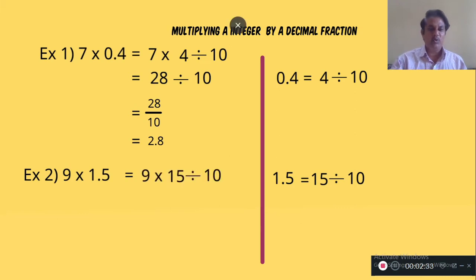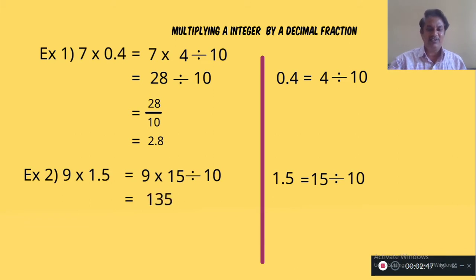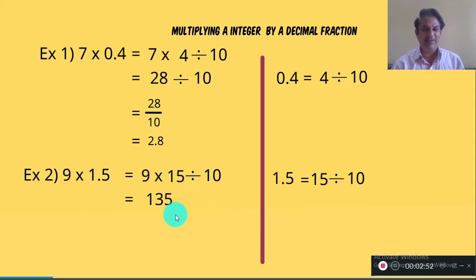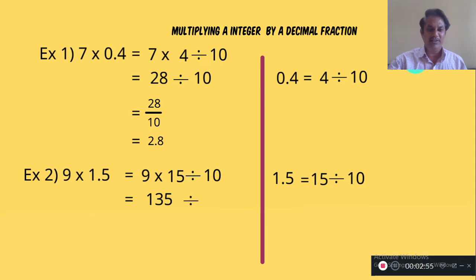9 into 15 divided by 10. 9 into 15 is 135. So we get 135 divided by 10.